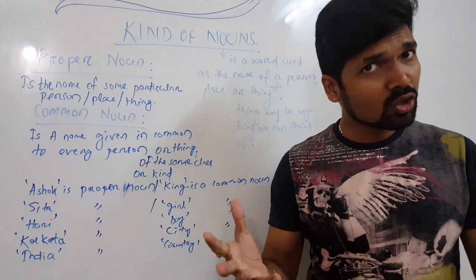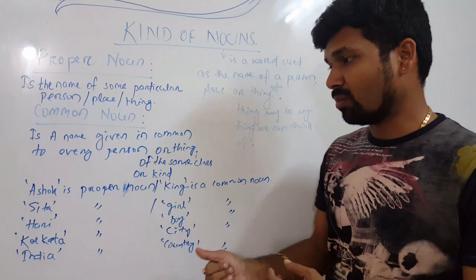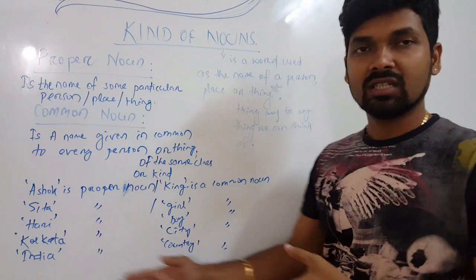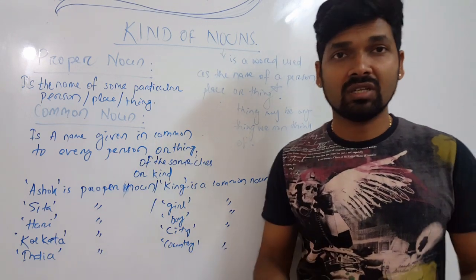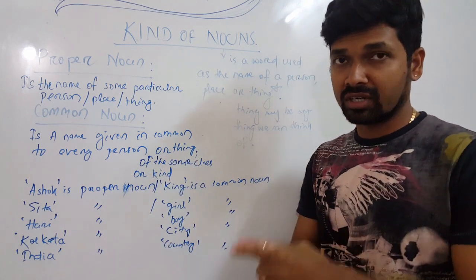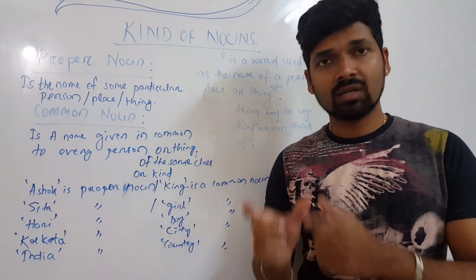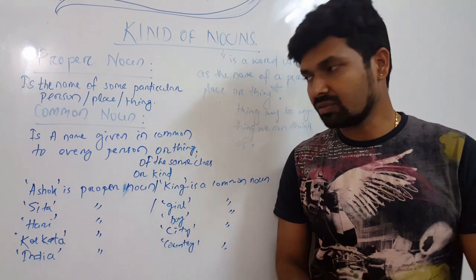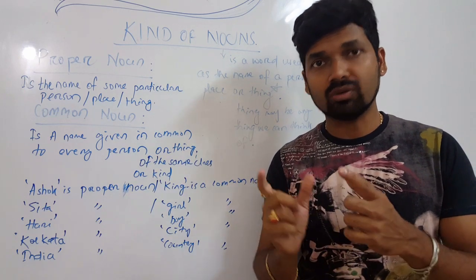Kolkata is a beautiful city — Kolkata is a proper noun, city is a common noun. India is the greatest country in the world — India is a proper noun and country is a common noun. India is a particular name of a country. Kolkata is a particular city. Hari and Sita are particular names — they are specific, they denote a particular person or place.